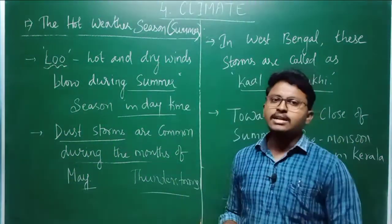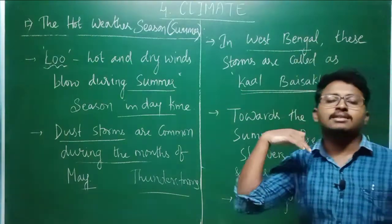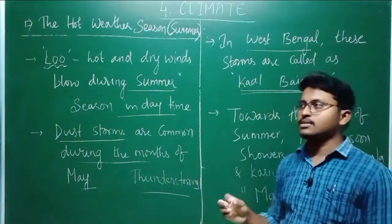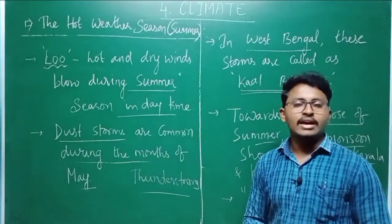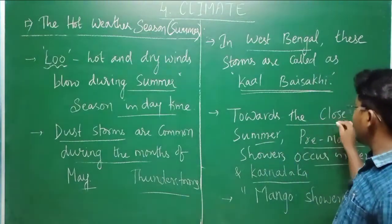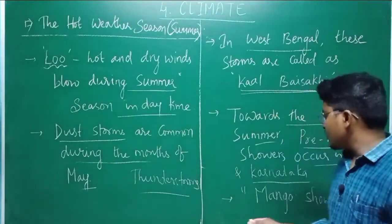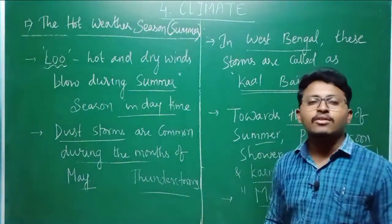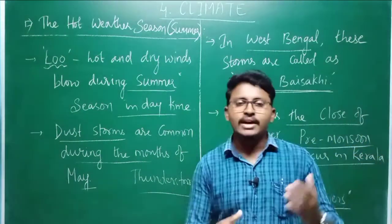The dust storms that occur in the northern part of India are known as Kalbaisakhi in West Bengal. Towards the end of May, pre-monsoon showers occur in Kerala and Karnataka. From the beginning of June, monsoon winds start blowing towards India. At the end of May, these pre-monsoon showers occur especially in Kerala and Karnataka, and they are known as mango showers. The reason they are called mango showers is that these pre-monsoon showers help in the ripening of mangoes.